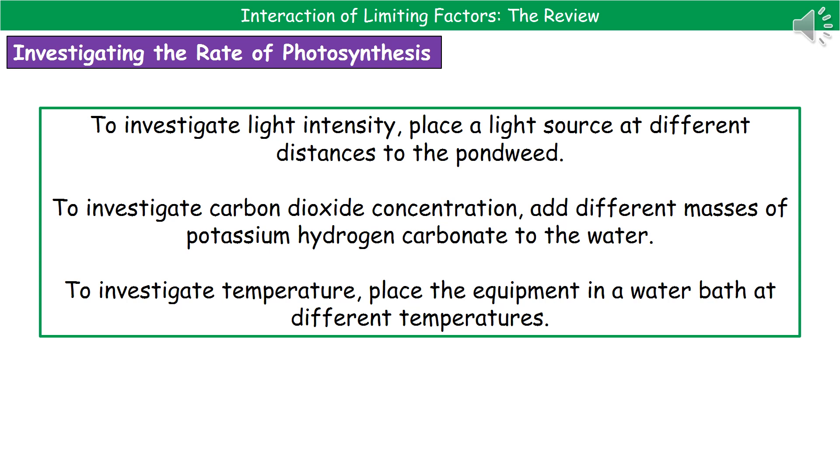To investigate how carbon dioxide concentration affects it, you can add different masses of this chemical called potassium hydrogen carbonate to the water because that actually creates the carbon dioxide for our plant to work. If you're investigating temperature, you just put the equipment in a water bath at different temperatures and record the amount of gas you make each time. Make sure you're aware of the different techniques we would use to generate those different conditions for an investigation.